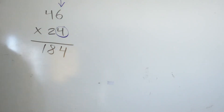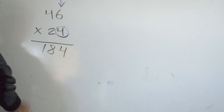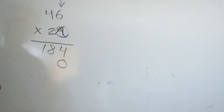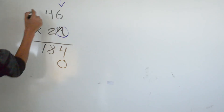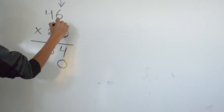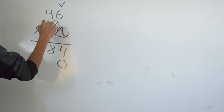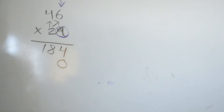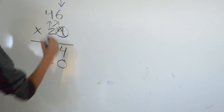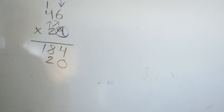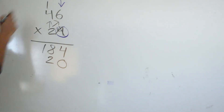Now we cross out the 4 and we add a 0. Now we multiply from right to left: 2 times 6 and 2 times 4. 2 times 6 is 12. Carry the 1 on top. 2 times 4 is 8 plus the 1.